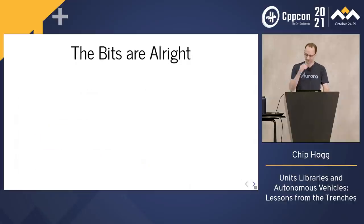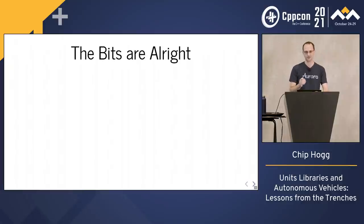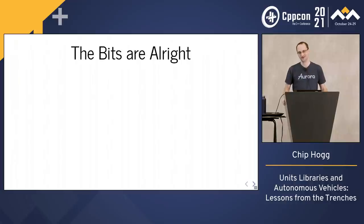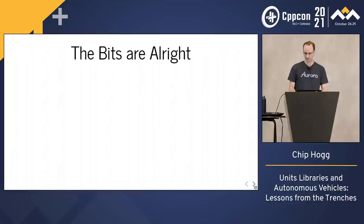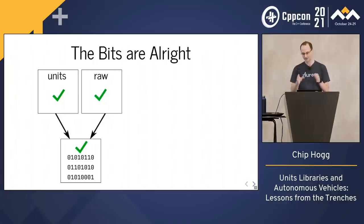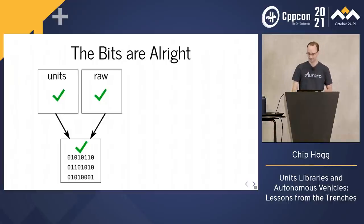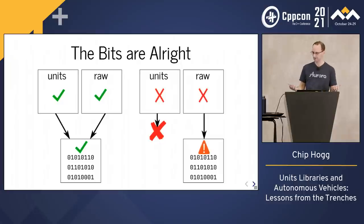And yet, if you think about it, there's nothing wrong with the binary executable. The numeric types that flow through the program — double, float, int — they're exactly the same types that we want flowing through it. This is the key point of what we want from a units library. We want different source code which produces the same program when we get it right, but does not build when we get it wrong.